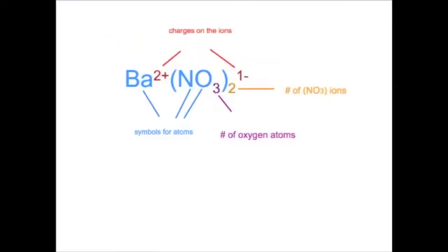Here we can see the chemical formula for barium nitrate. We see the symbols for barium, nitrogen, and oxygen, and the charges on each ion. Barium is a positive monatomic ion, and nitrate is a negative polyatomic ion. The small three after the oxygen tells us there are three oxygens in nitrate, while the two outside of the parenthesis tells us that there are two nitrate ions. That means there is two of everything inside the parenthesis.